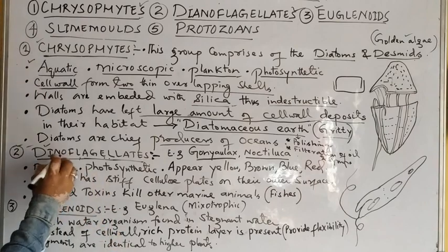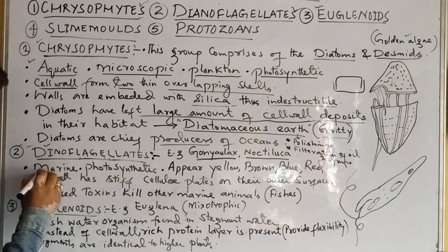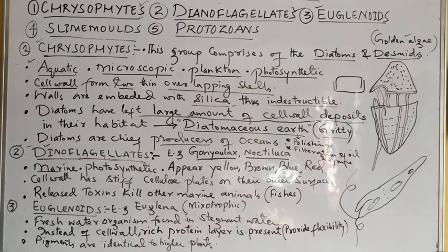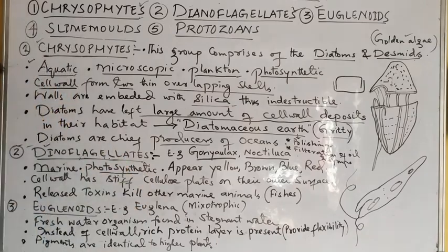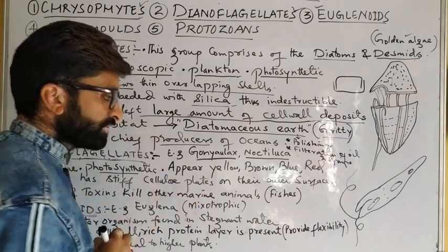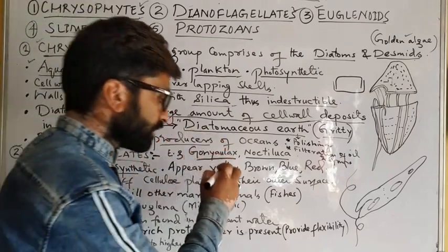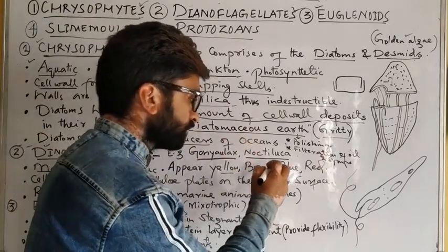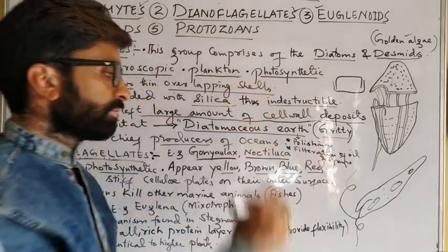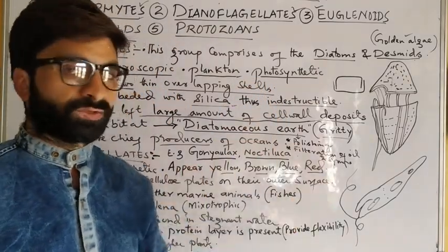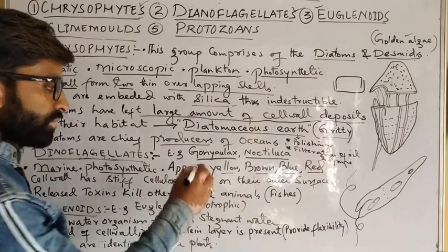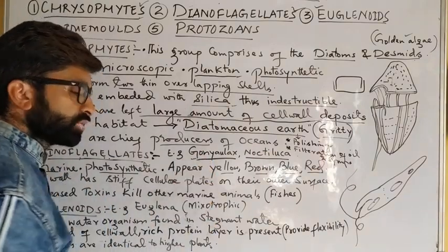Dinoflagellates can be marine or fresh water — mostly marine, i.e., salt water. They are photosynthetic and autotrophic. Their major pigments are yellow, brown, blue, and red, but mostly they have red pigments, so they appear red in color.